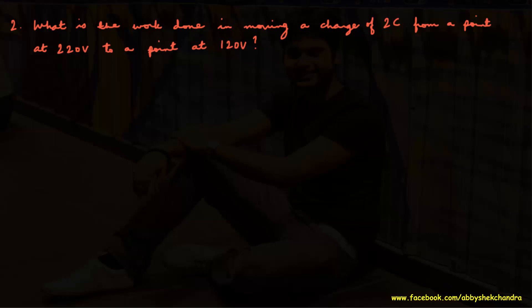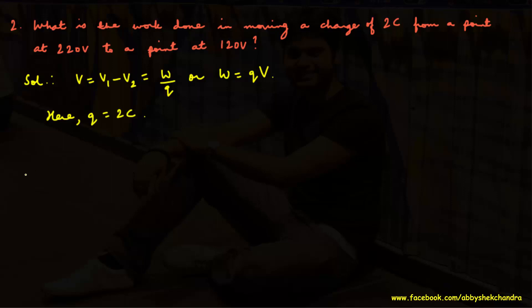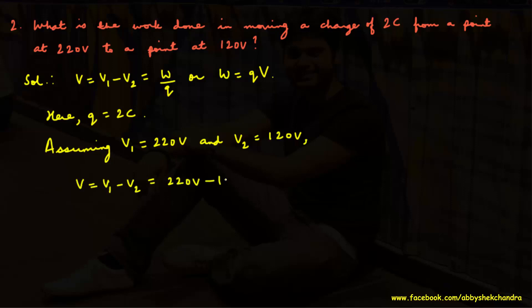Question 2: What is the work done in moving a charge of 2 coulombs from a point at 220 volts to a point at 120 volts? Here q = 2 coulombs, V1 = 220 volts, V2 = 120 volts. Potential difference V = V1 minus V2 = 220 minus 120 = 100 volts. Therefore, work done W = q × V = 2 × 100 = 200 joules.